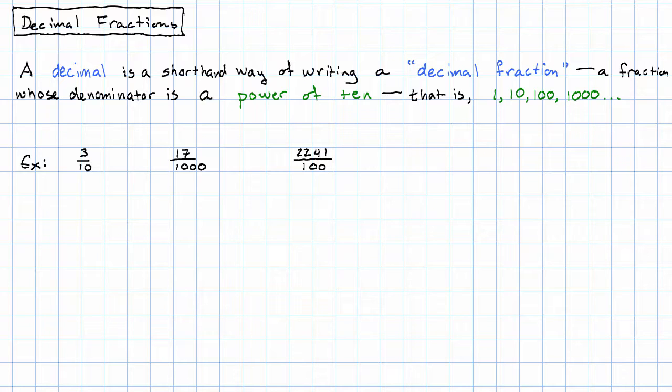And what is our shorthand way of writing these? Our shorthand way of writing these uses what's called a decimal point. To write three tenths as a decimal, I would write zero point three.